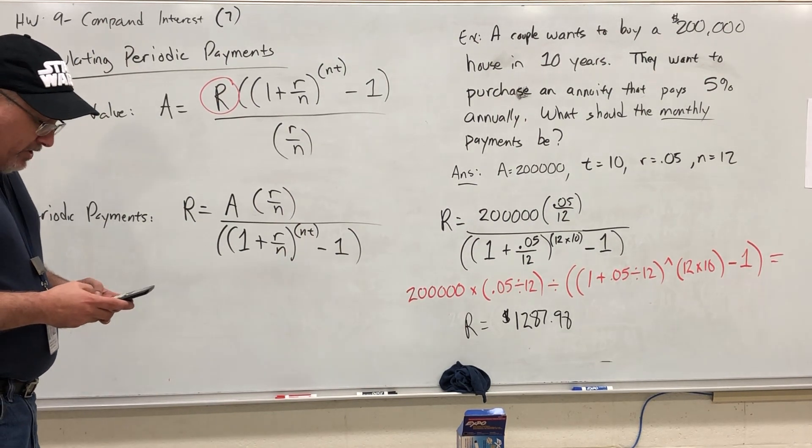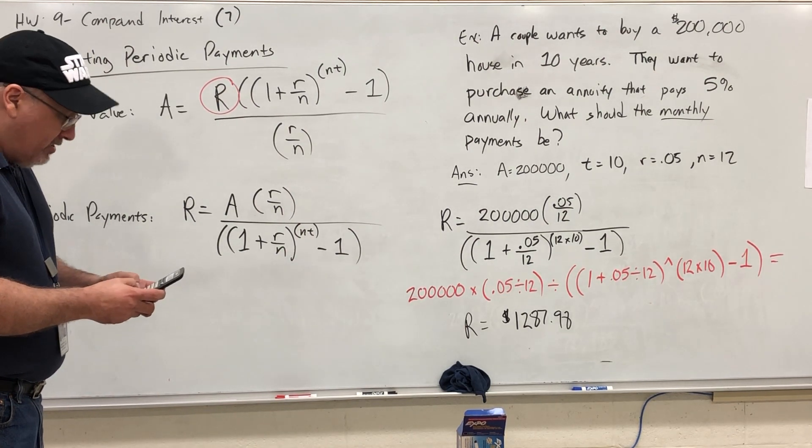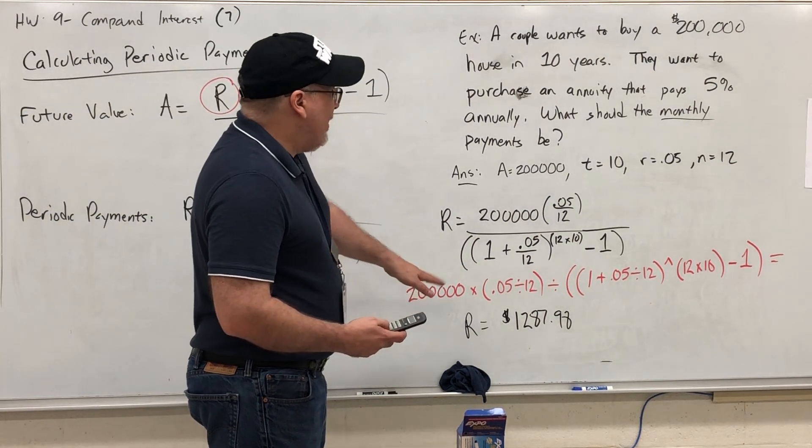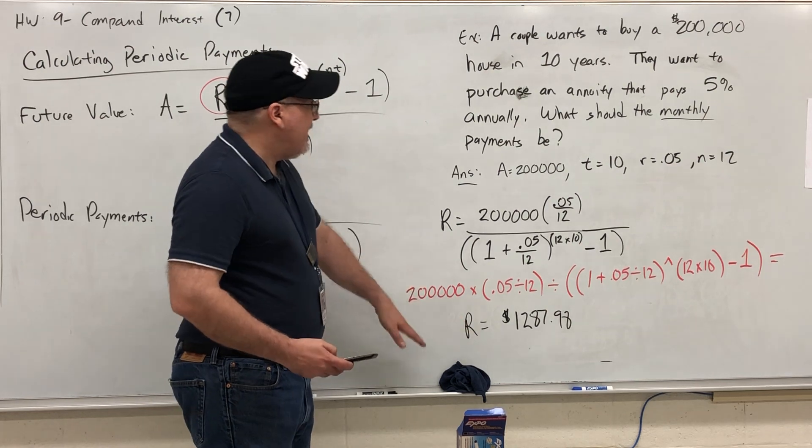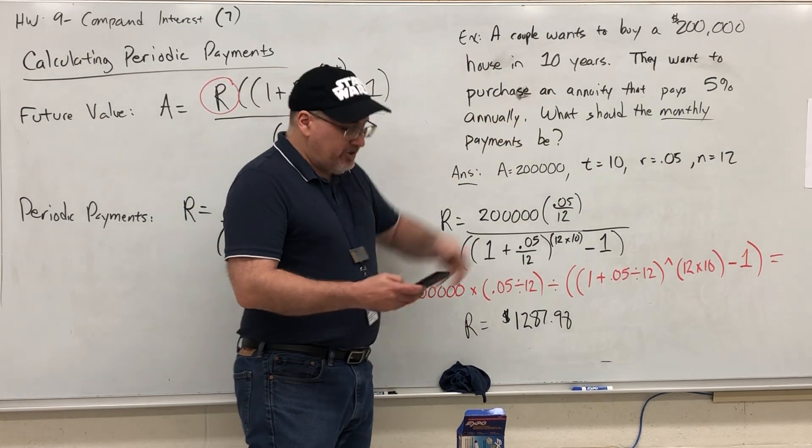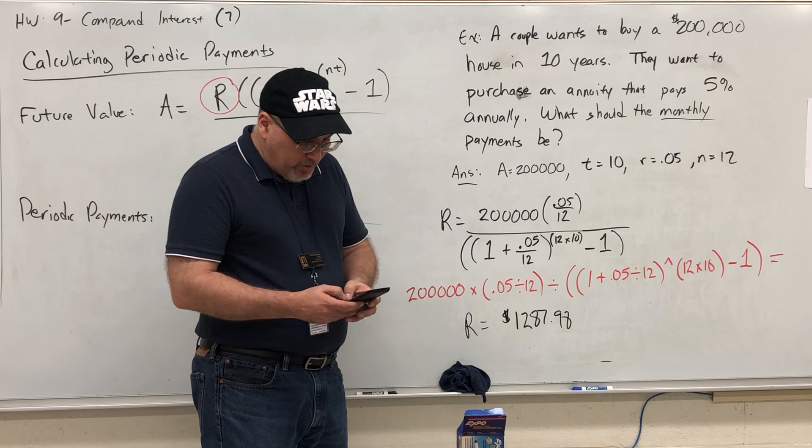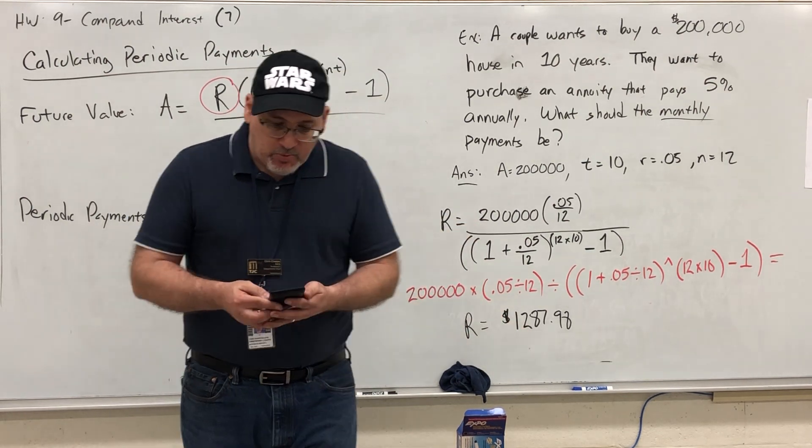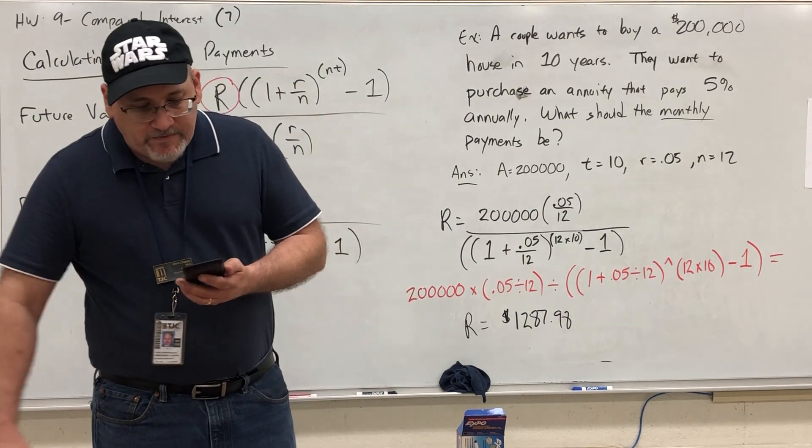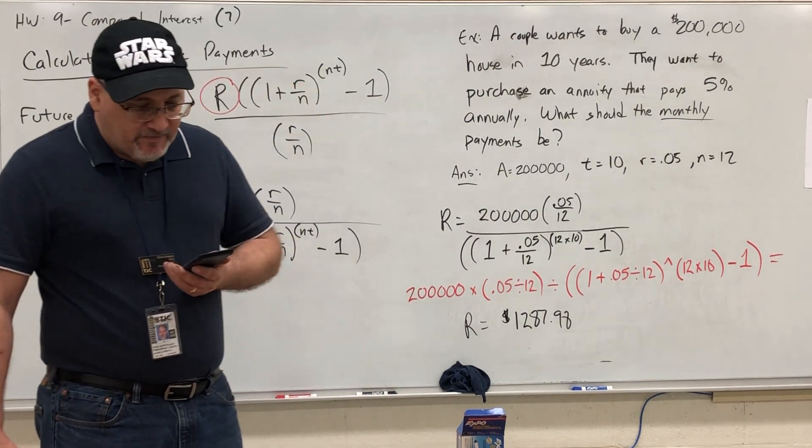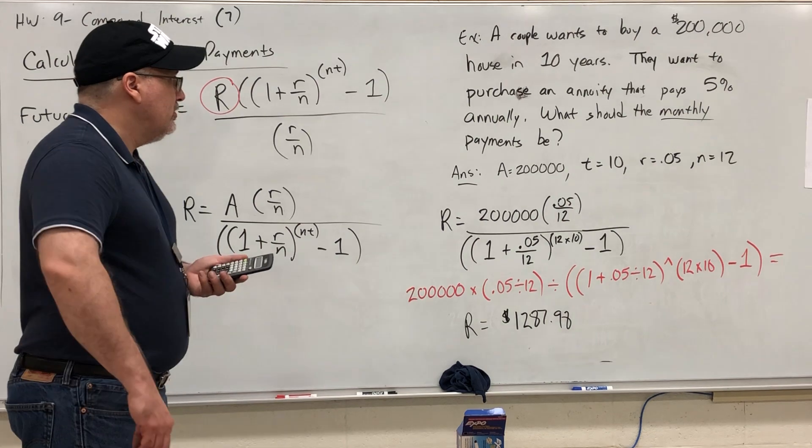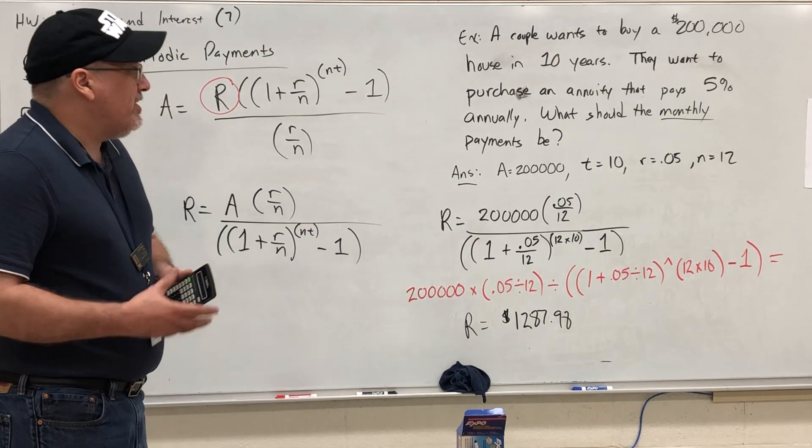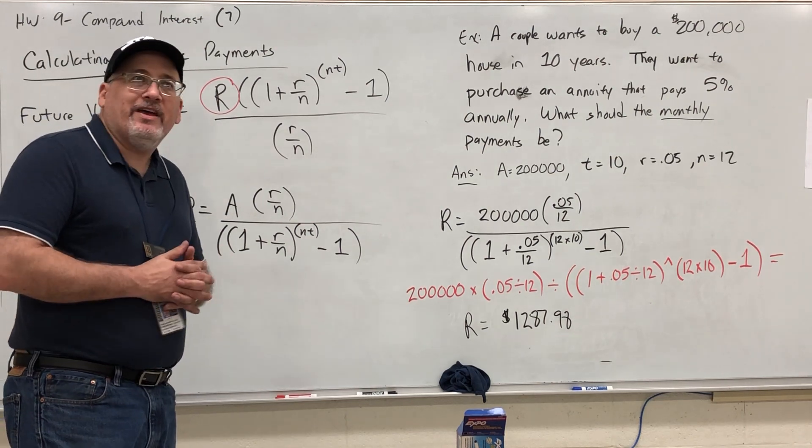Just to show you, if you take that $1,287.98 and figure out how many times you would pay that, 12 times a year for 10 years, so times 12 times 10, altogether over 10 years you will have paid $154,557.60 for a $200,000 house. So you ended up saving about $45,000 by saving for it in advance.